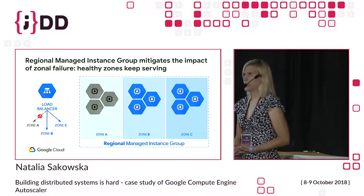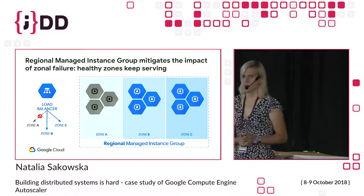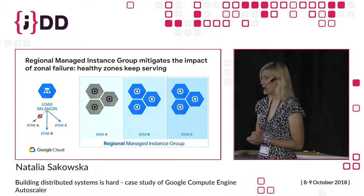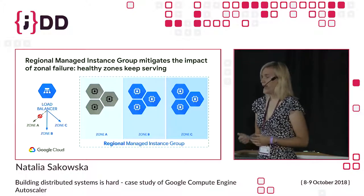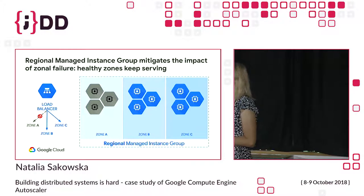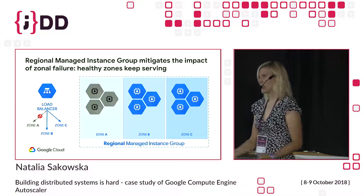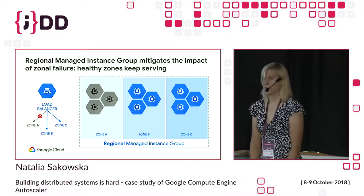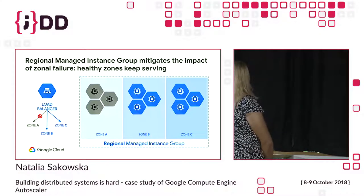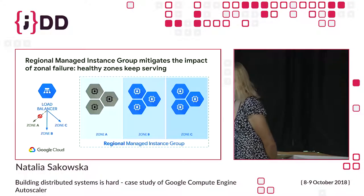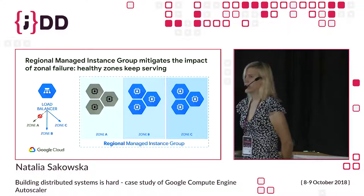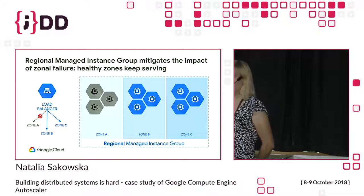A user might want to run their services in a region but not care which specific zone. They might know they have clients in US-Central1 and want their service there, but they don't want to decide on the zone. Also, they might worry the zone could become unavailable — the control plane crashes, the data center burns, or there's a stockout of resources and you can't create new VMs. With a regional managed instance group, if one zone is unavailable, your load is spilled over to other zones — you have a backup plan.